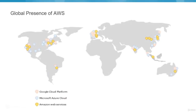Regarding the global presence of AWS, the orange dots depict where AWS has actual data centers. AWS currently has data centers in 16 regions with a few more coming soon. These regions are isolated geographic locations, and within each region there are multiple availability zones — the physical data centers where actual servers and other services reside.